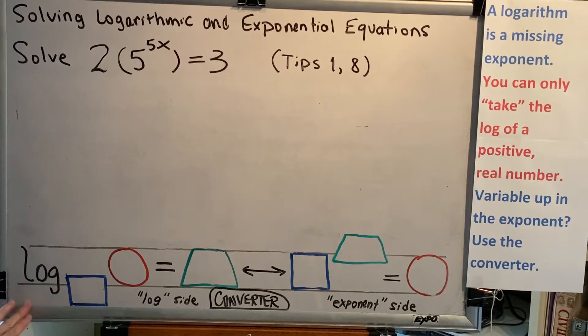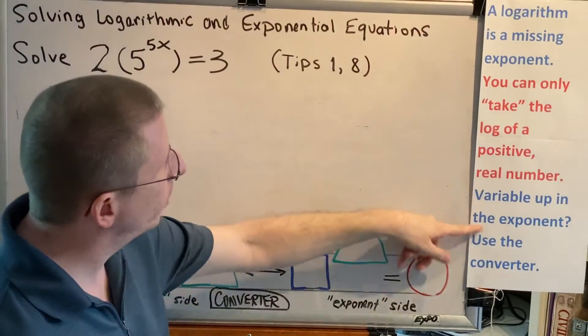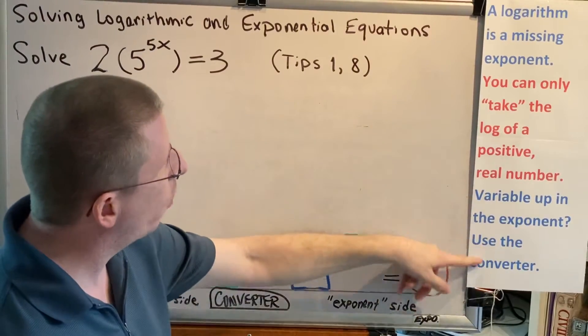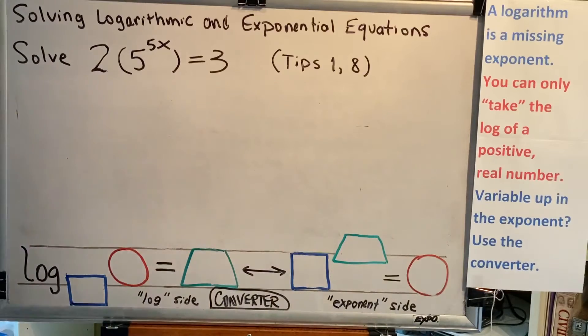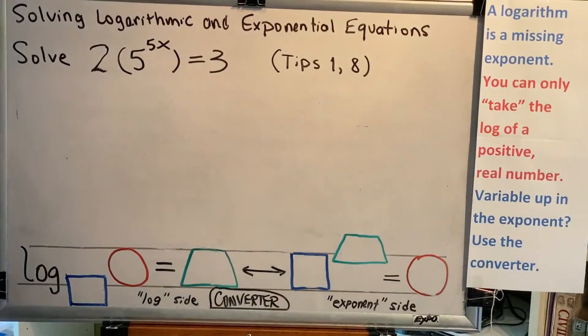Let's take a look at one thing before we even begin solving this problem. There is no log in this equation, so therefore we do not have to do the domain. But we do notice that the variable we're being asked to solve for is up in the exponent. So when your variable is up in the exponent, we know that at some point we're going to need to use the converter. And since there's no log in the equation, it's the exponent side of the converter that we're going to use.